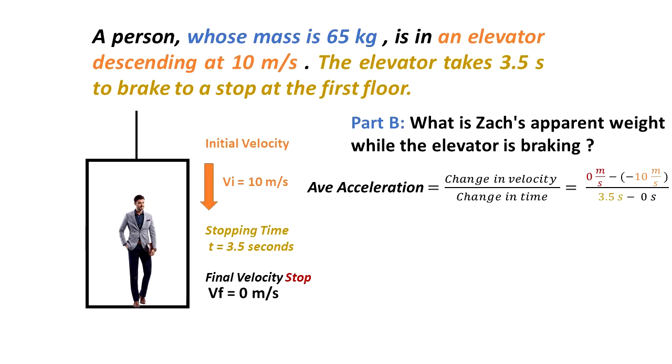From this information we can calculate the average acceleration. It is the change in velocity divided by the change in time. We have that our final velocity is zero meters per second minus initial velocity that's negative 10 meters per second. Final time is 3.5 seconds minus zero seconds. After computing these numbers, we get that the average acceleration is 2.857 meters per second squared.